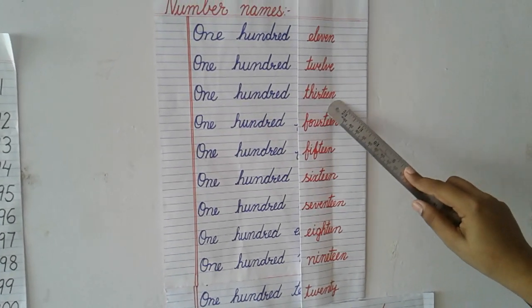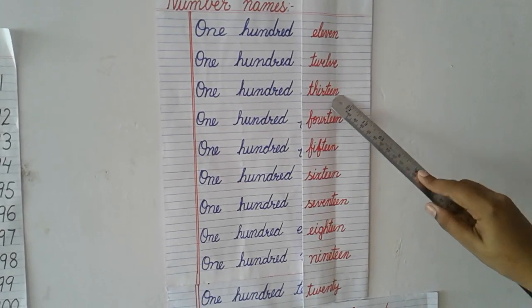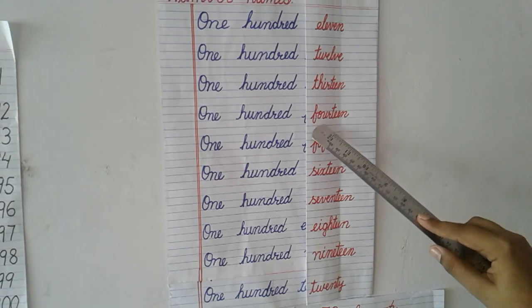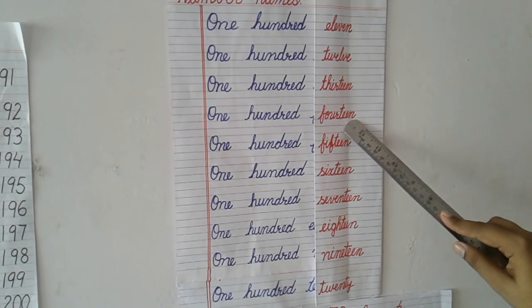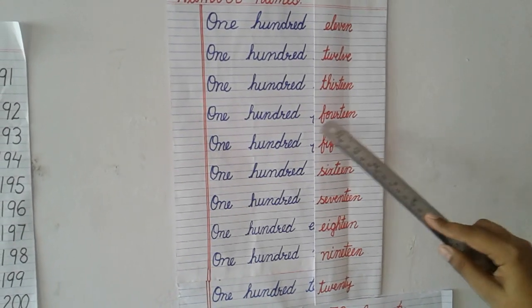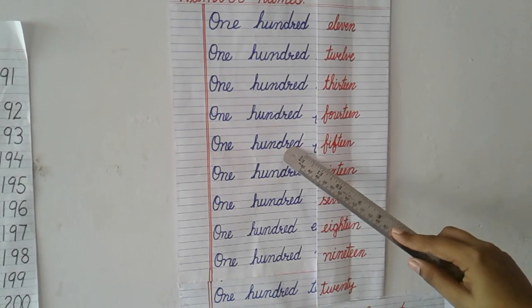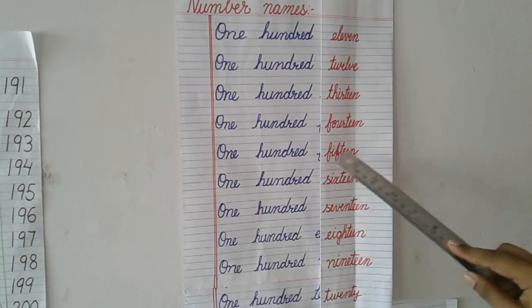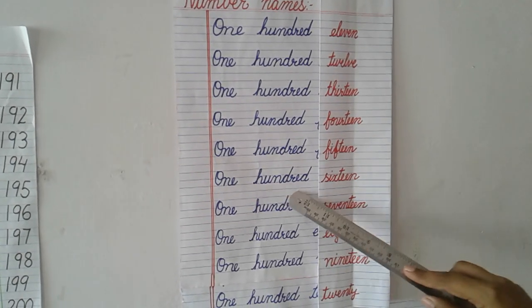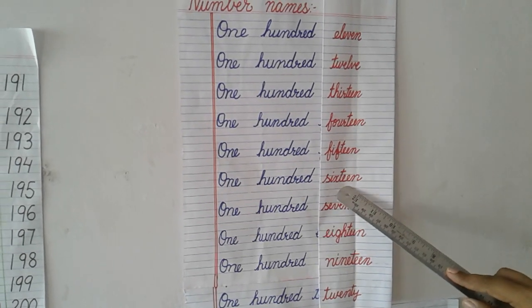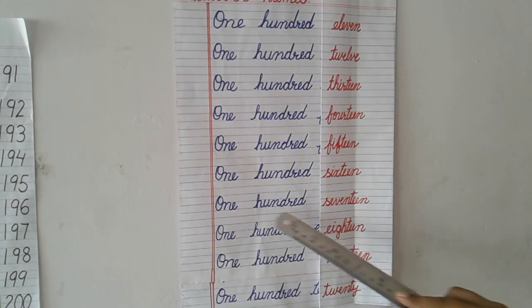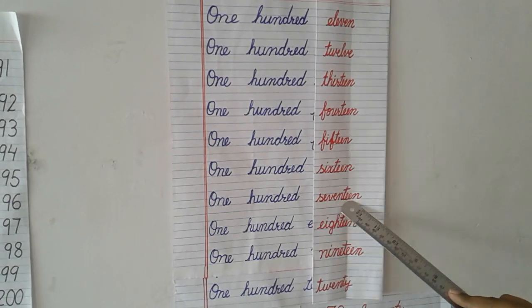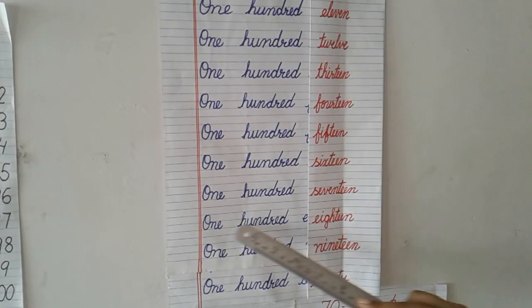ONE HUNDRED THIRTEEN. ONE HUNDRED FOURTEEN. ONE HUNDRED FIFTEEN. ONE HUNDRED SIXTEEN. ONE HUNDRED SEVENTEEN.